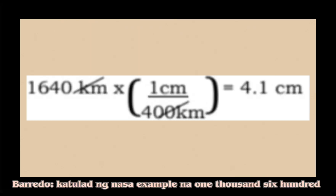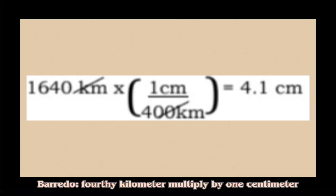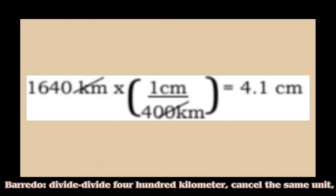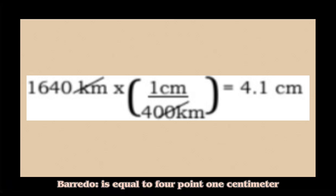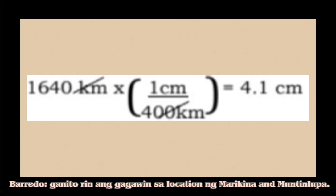For example, 1,640 km × 1 cm divided by 400 km — cancel the same unit — is equal to 4.1 cm. This is also what we will do for the location of Marikina and Muntinlupa.